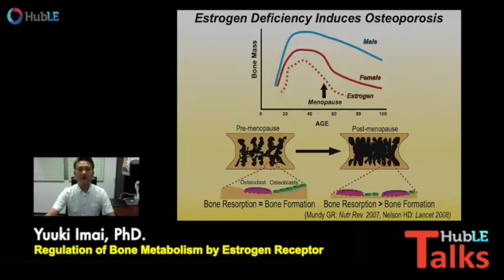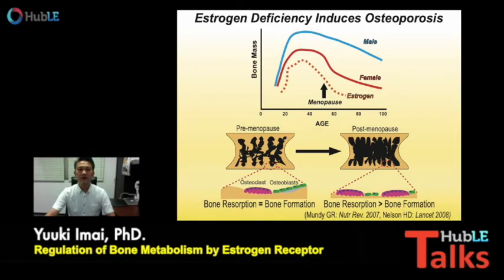As you can see in this slide, female bone mass can be decreased after menopause. It is so-called postmenopausal osteoporosis, which is accompanied by high turnover bone metabolism.